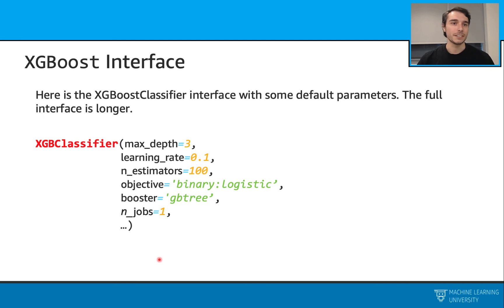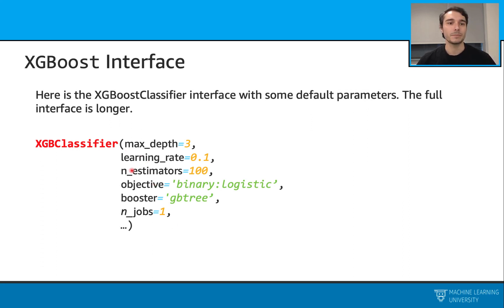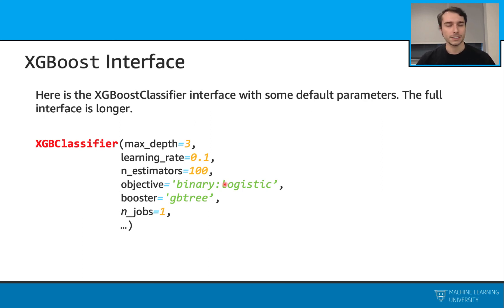Let's also talk about the interface. The XGBoost interface is really easy to use — we just import the classifier or the regressor. Some of the default parameters include maximum depth, learning rate, number of estimators, and the objective. For the classifier, you can also change the objective to multi-class classification, and there are many more parameters to play with. Overall, this is a really good method for tabular datasets, and I strongly recommend that you give it a try for your final project.